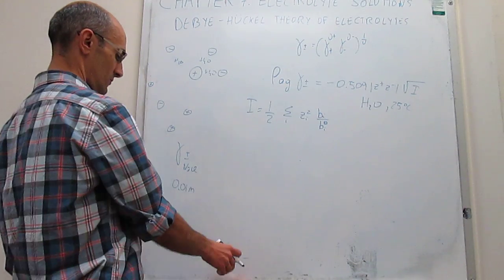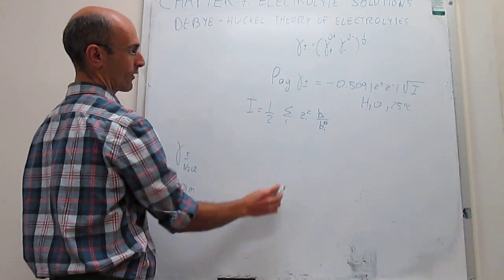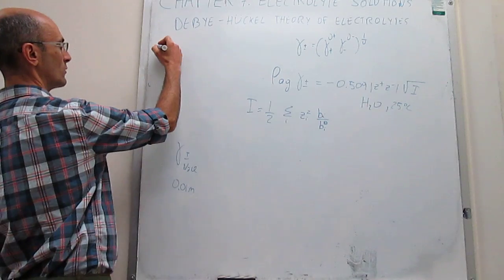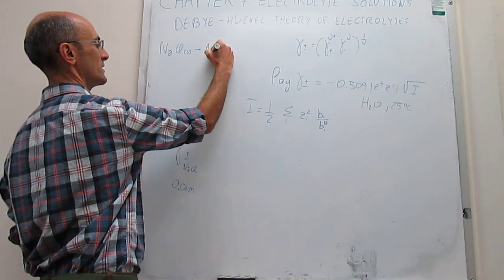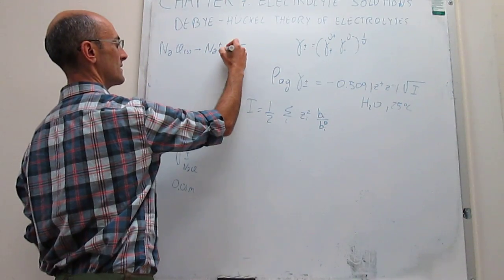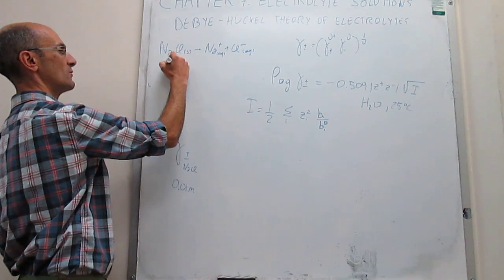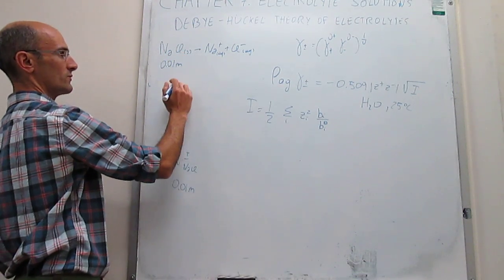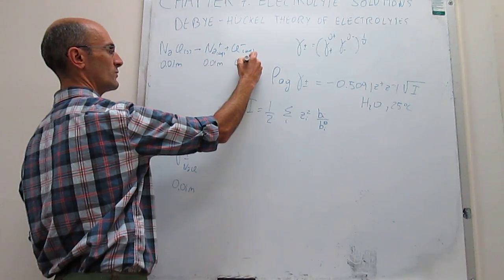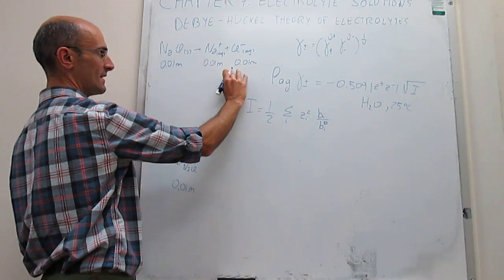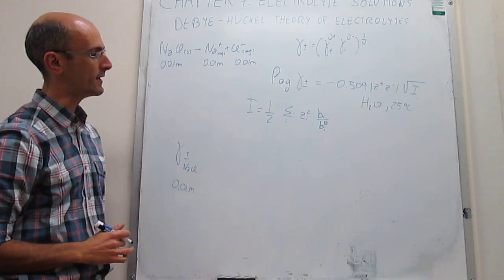The first thing you have to do to calculate this mean ionic activity coefficient is write how this salt dissociates. This dissociates to Na⁺ and Cl⁻ in aqueous solution. You have a 0.01 molal concentration in the salt, that means you have 0.01 molal of sodium ions and 0.01 molal of chloride minus. Notice that these numbers will change according to the stoichiometric coefficients of each one of the ions.